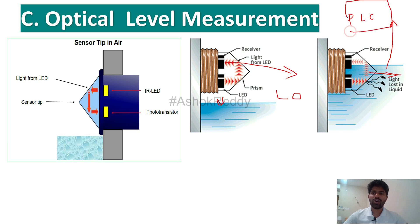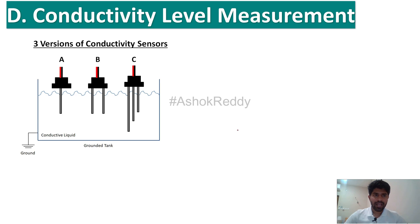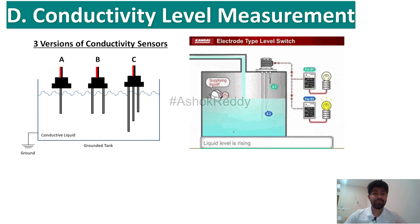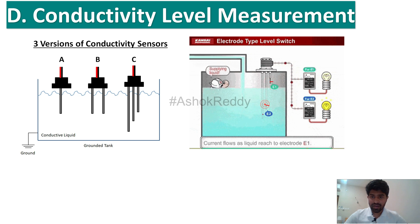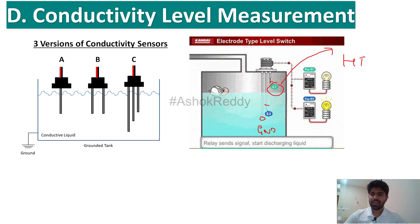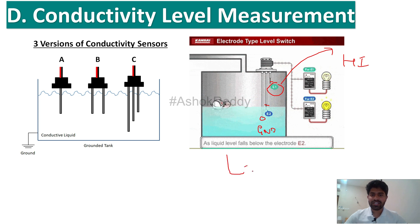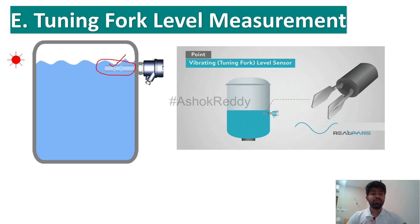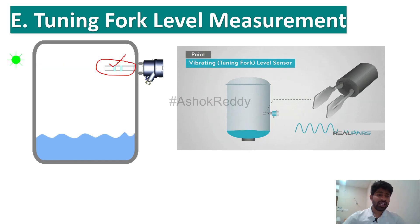The fourth one is the conductivity level measurement. In this one we have conductors E1 and E2, and a ground. Whenever the water touches the E1 level it is considered as high, and whenever the water goes below E2 it is considered as low. This is how the conductivity level measurement works.